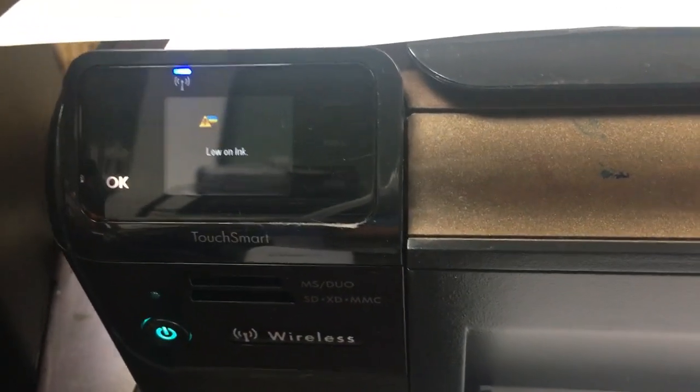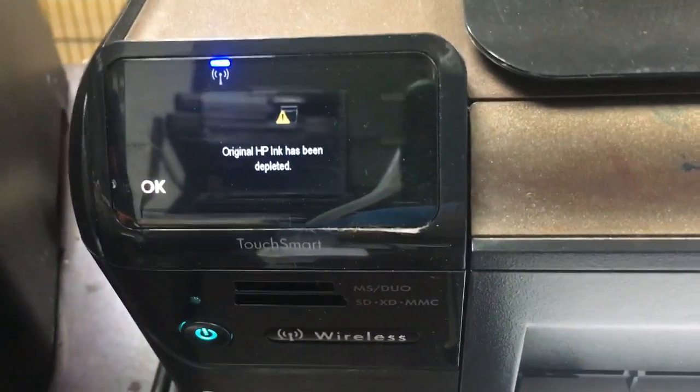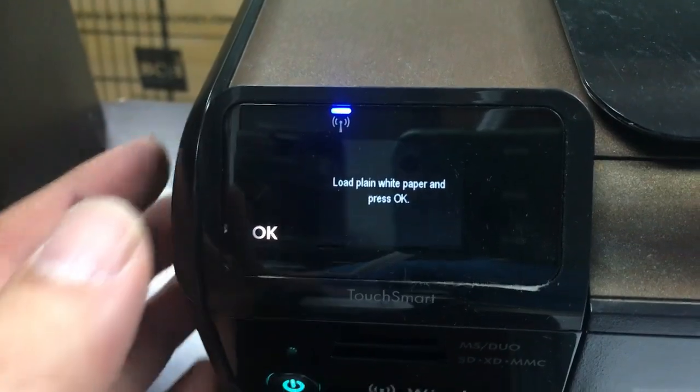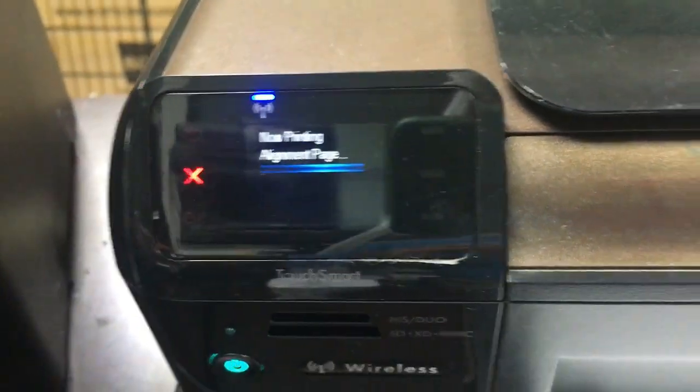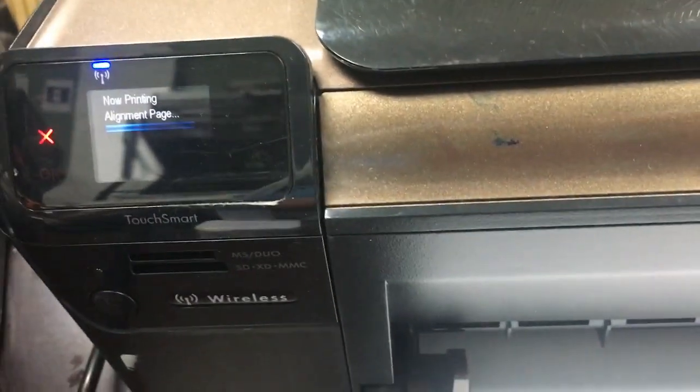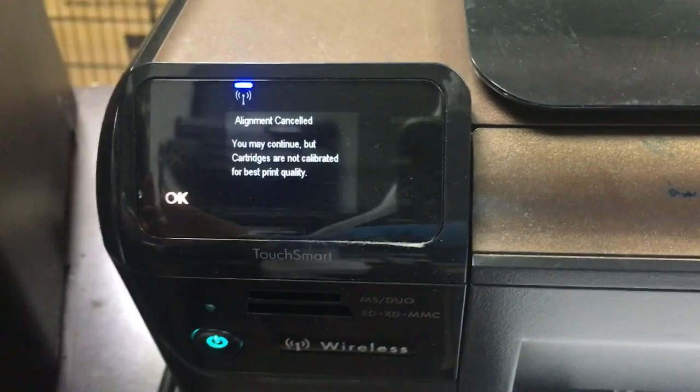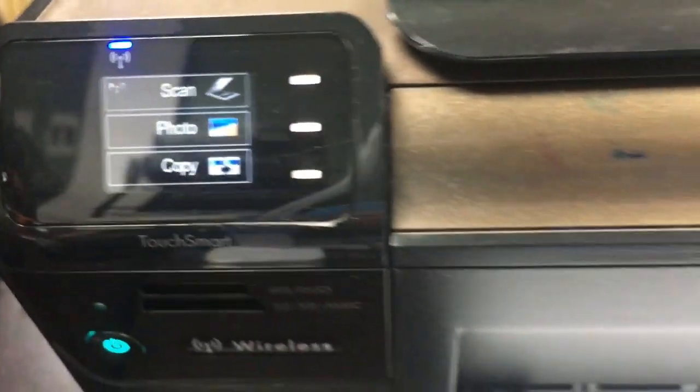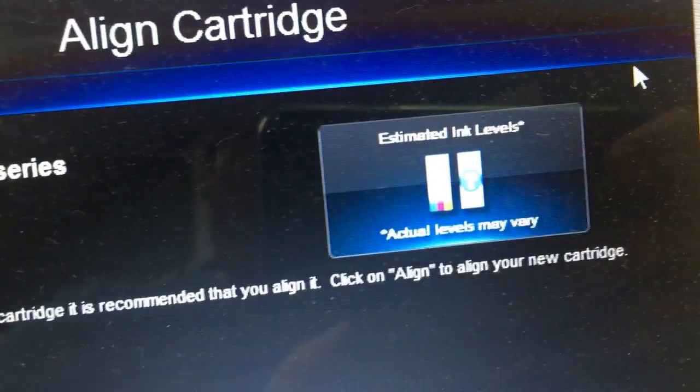The refilled cartridge will not show actual ink levels. It will always show low ink and or ink depleted. When you see the warning said the original cartridge has been depleted, just click OK. And then now the printer will just keep printing. And just pay attention to the printout. If a color is missing, just add more ink. If you have stripes, just do the unclogging as we did earlier.